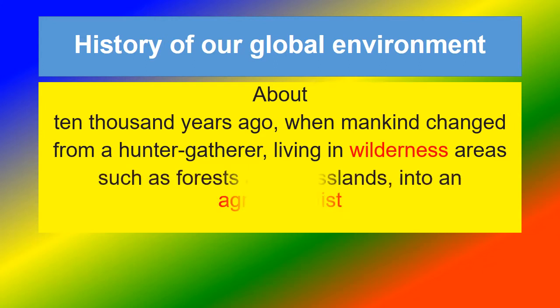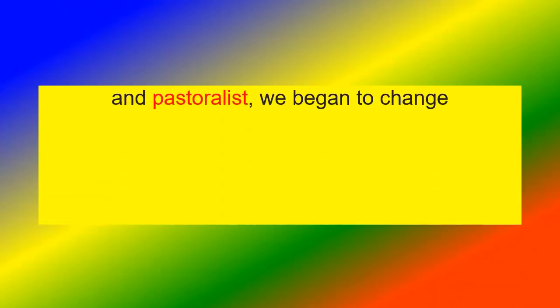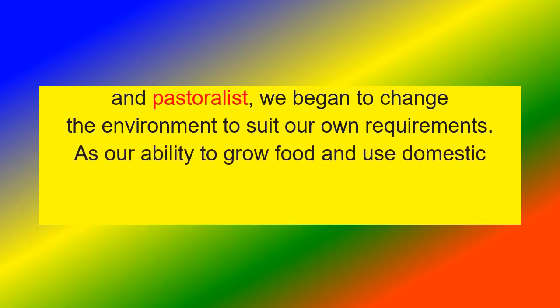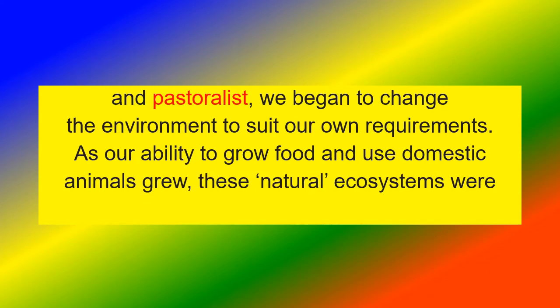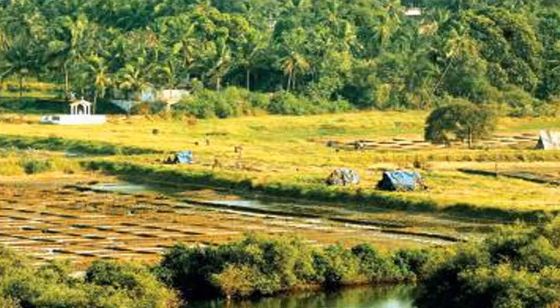In wilderness areas such as forests and grasslands, as we transitioned into an agricultural and pastoralist way of life, we began to change the environment to suit our own requirements. As our ability to grow food and use domestic animals grew, these natural ecosystems were developed into agricultural land.